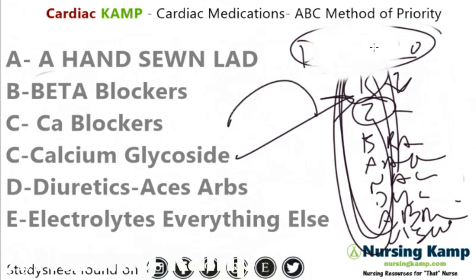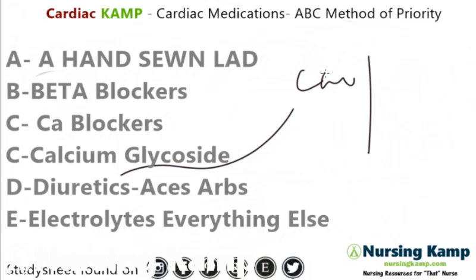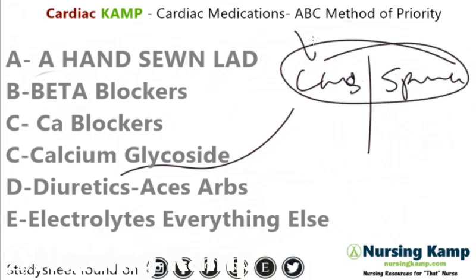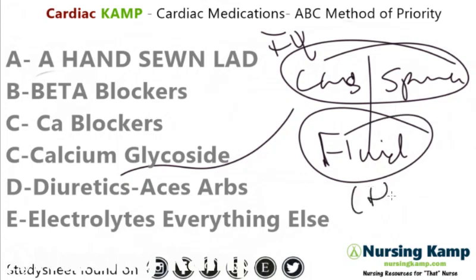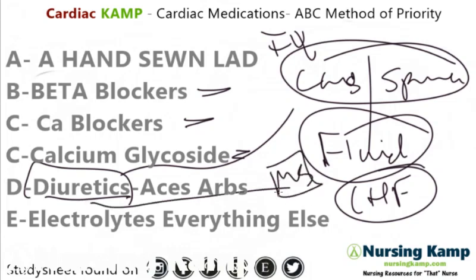Next is diuretics. Diuretics are important because there are two types — you have Lasix and then you have spironolactone. It's not really that acute unless it's IV; generally it's dealing with fluid, and fluid is important because of a patient with CHF — we're going to try to treat them for that. Generally, the medications higher up are more acute than diuretics. Diuretics are more common medications; they could be given on a med-surg floor and even maternity if needed.